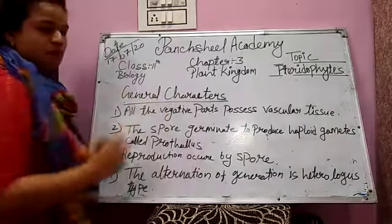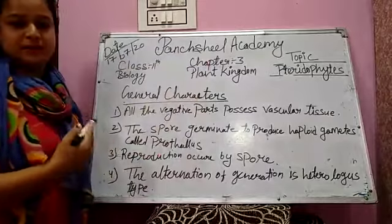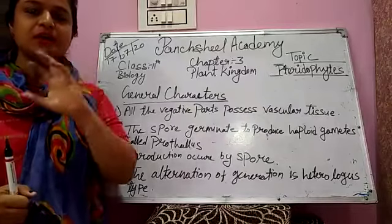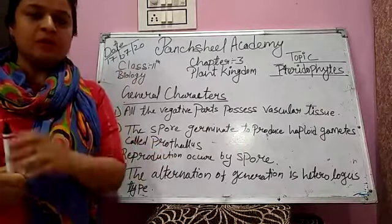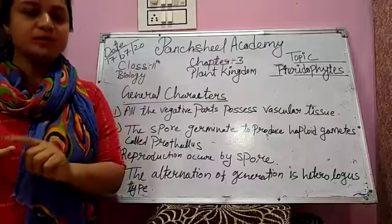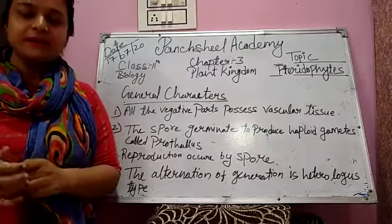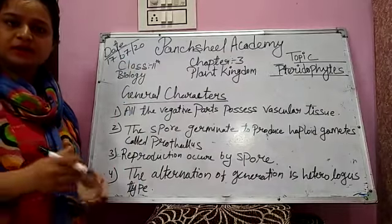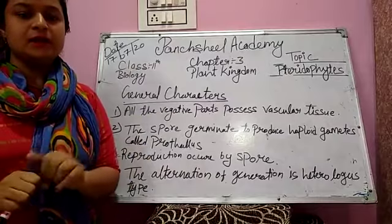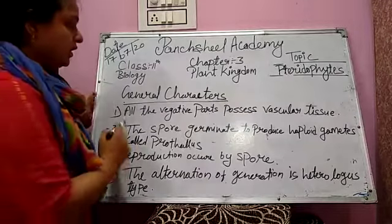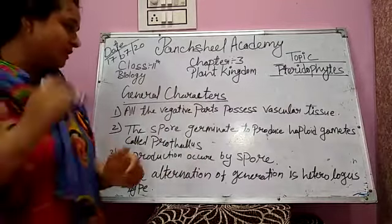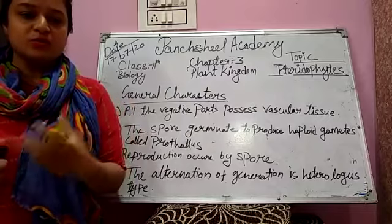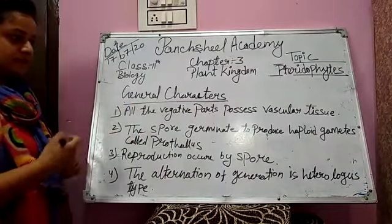Now we are discussing the general characters of Pteridophyta. Pteridophyta are plants whose body is fern-like, that means their body looks like a fern or feather-shaped. Their body is divided into true root, true stem, and true leaves, meaning their body is completely developed. They have adventitious roots with a permanent growing part. All the vegetative parts possess vascular tissue. The leaves may be small microphylls or large megaphylls.